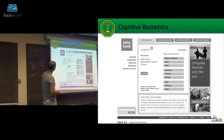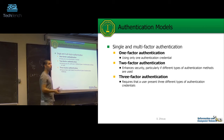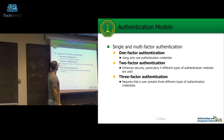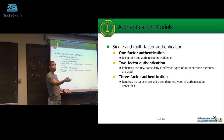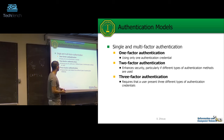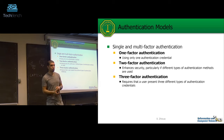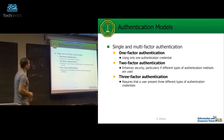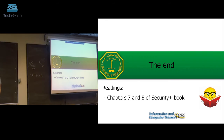Authentication models: the simplest is one-factor authentication — just one factor like a password or token. Then there's two-factor authentication, which is what we use for bank accounts, requiring two challenges. Three-factor authentication requires three different types: for example, a password, a one-time password, and biometrics.